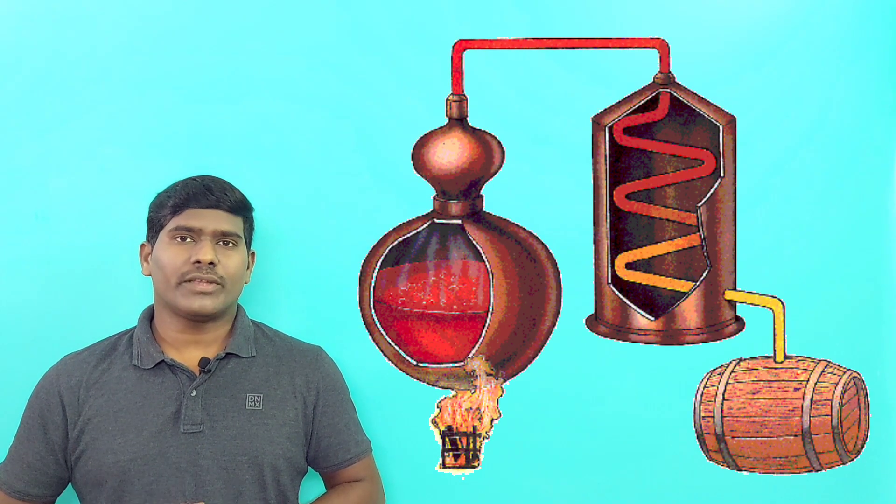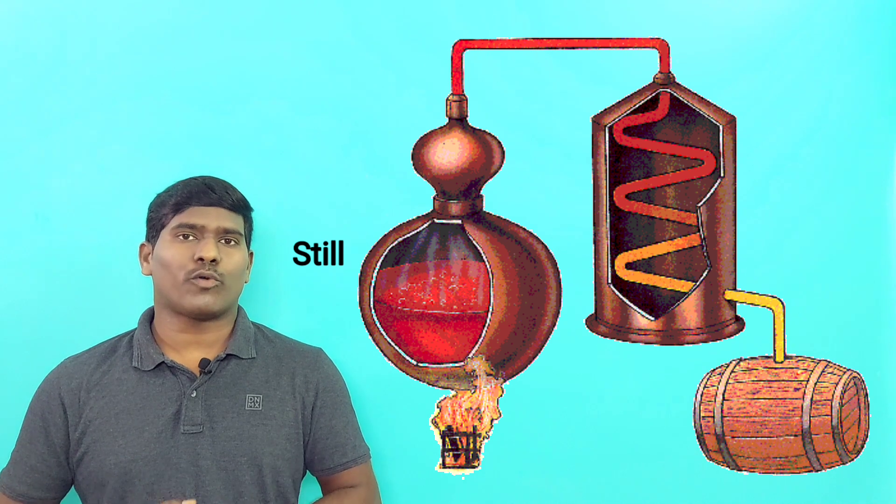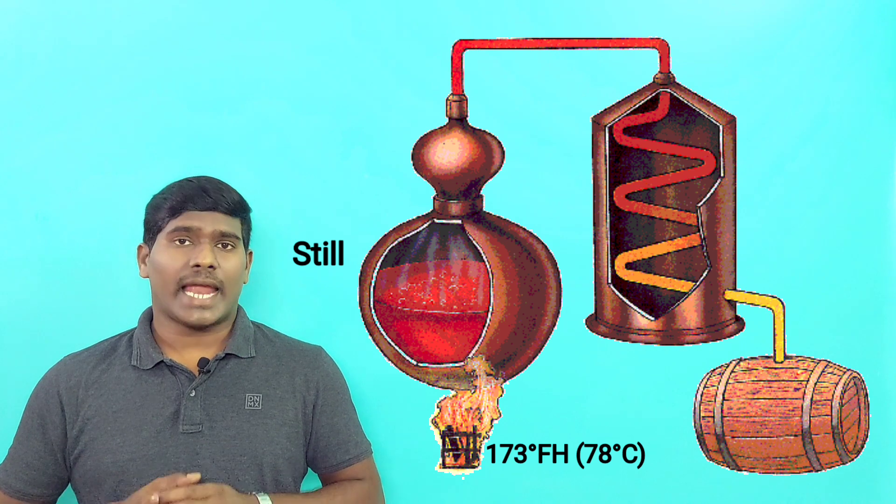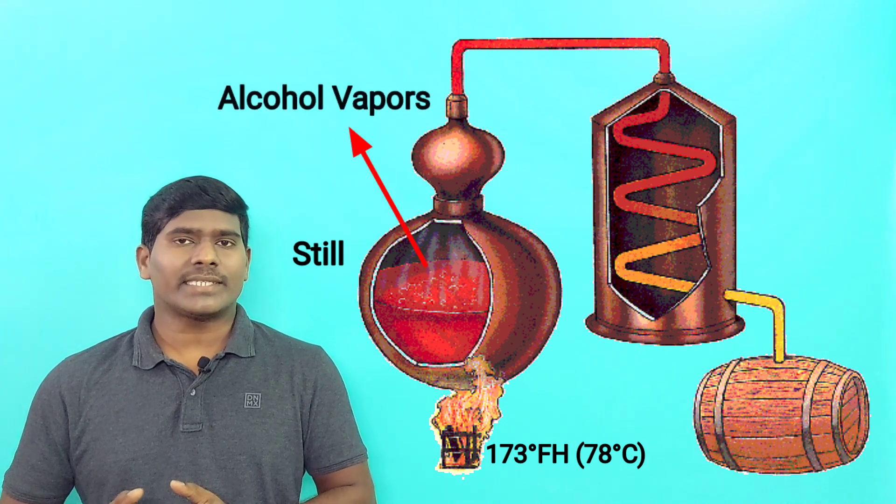In the process of distillation, fermented liquid is heated in a liquid container called a still to a temperature of about 173 degrees Fahrenheit or 78 degrees Centigrade. At this point, the alcohol changes from liquid to a gas and rises.